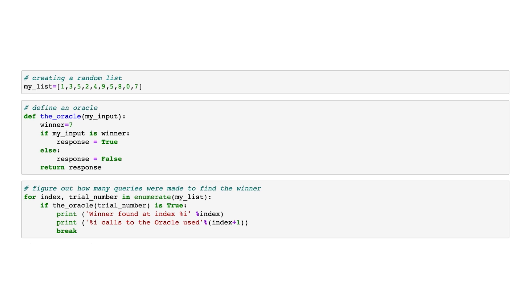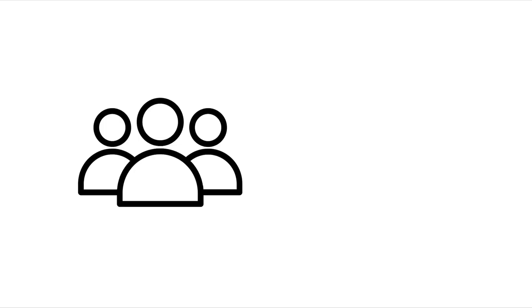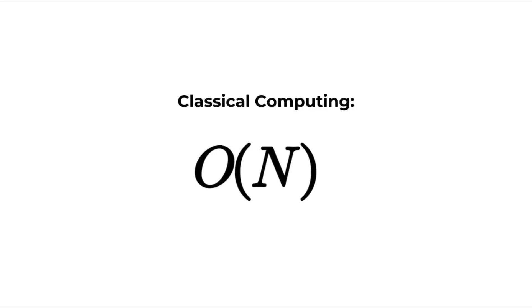In a classical approach, the computer evaluates each and every number sequentially until it finds the winning number. So what if the number was the last one amongst a million different data sets? Two things. One, that's exactly how we would approach the situation. And two, we'd waste so much time. Mathematically, this can be represented through O(N), where O is on the order of and N refers to the length of the list. This simply illustrates the worst case execution time for this problem.